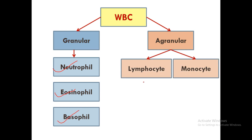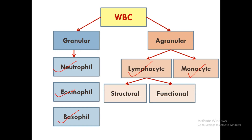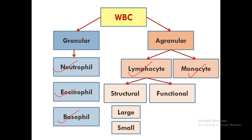Agranular cells are of two types: lymphocytes and monocytes. Lymphocytes are further divided into two types based on structure and function. The structural division includes large lymphocytes and small lymphocytes, whereas the functional division includes T cells and B cells, or simply T lymphocytes and B lymphocytes.